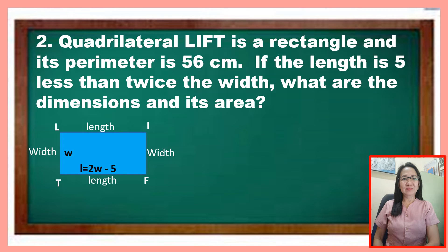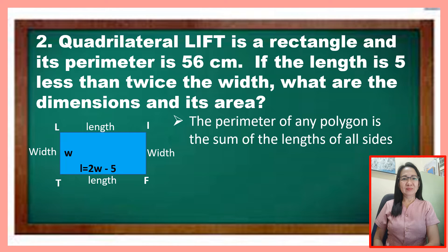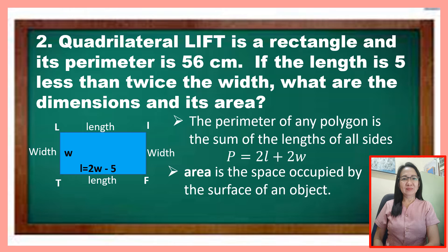What important information is needed to answer the problem? The perimeter of any polygon is the sum of the lengths of all its sides. So the perimeter of a rectangle is the sum of 2 lengths and 2 widths: P equals 2L plus 2W. Another concept is area, which is the space occupied by the surface of an object. The area of a rectangle is length times width, or A equals L times W.